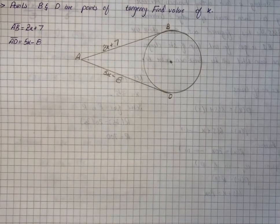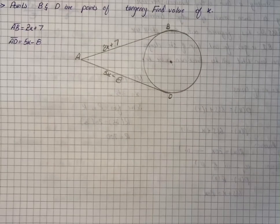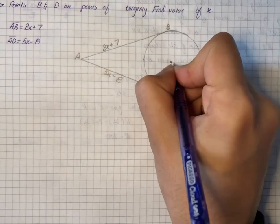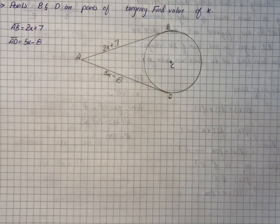The question says that points B and D are points of tangency. Here we have a circle with center C, and there is a point A outside the circle that is being joined to the circle through